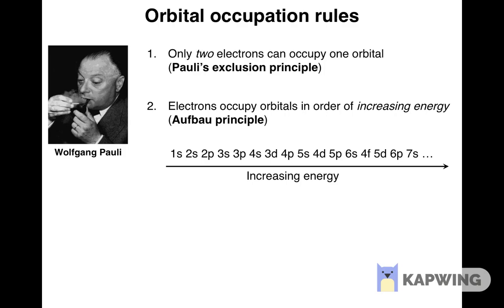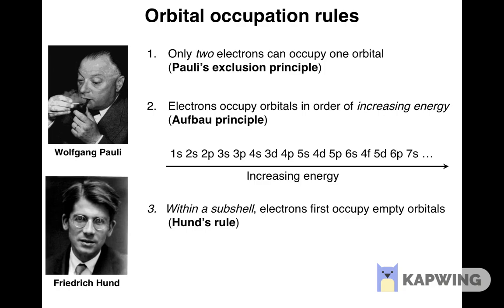The third and final rule was found by the German physicist Friedrich Hund and is known as Hund's rule. It states that within a subshell, electrons occupy empty orbitals first, and only when there are no empty orbitals left will electrons share an orbital with another electron. This behavior is often said to be similar to that of passengers on a bus who will first occupy empty seats and only then sit next to another passenger if there are no empty seats left.